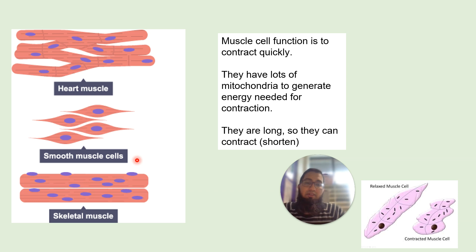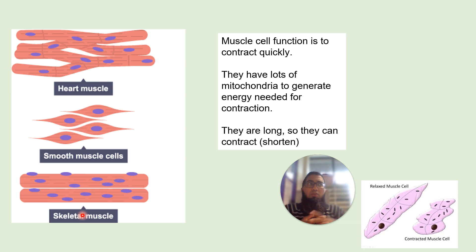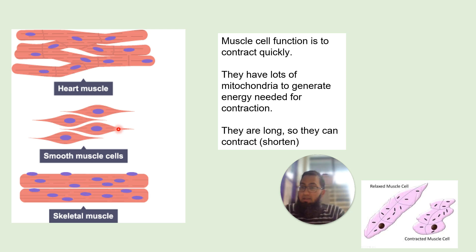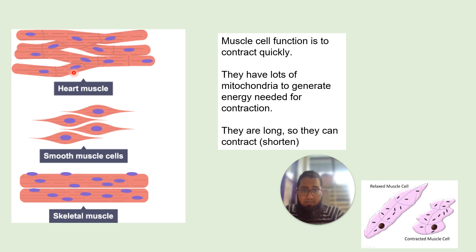We have different types of muscles: heart muscle, smooth muscle found around blood vessels, and skeletal muscle attached to bones. The main job of a muscle is to contract quickly — when it contracts it becomes shorter. Contraction requires energy, so muscle cells contain lots of mitochondria to provide that energy through respiration. Muscle cells are also long so they can contract and become shorter effectively.